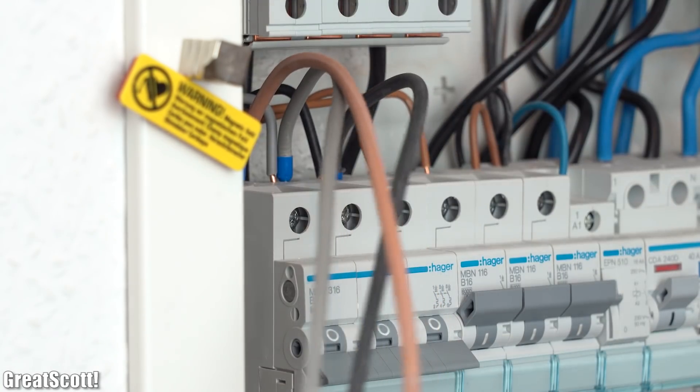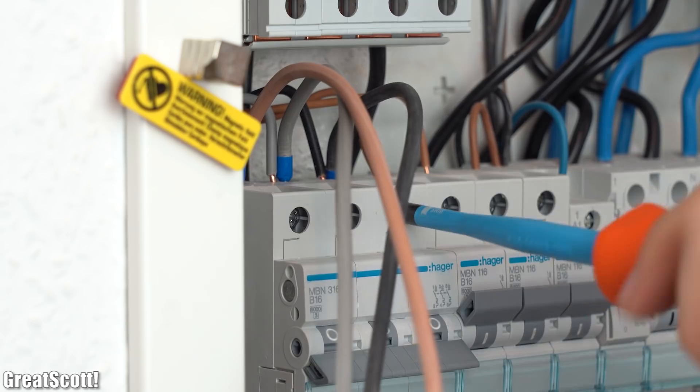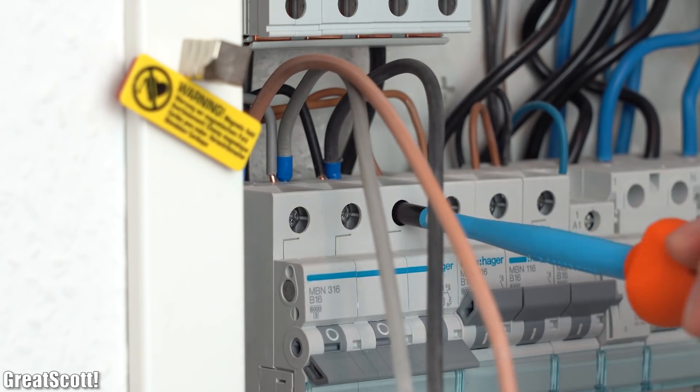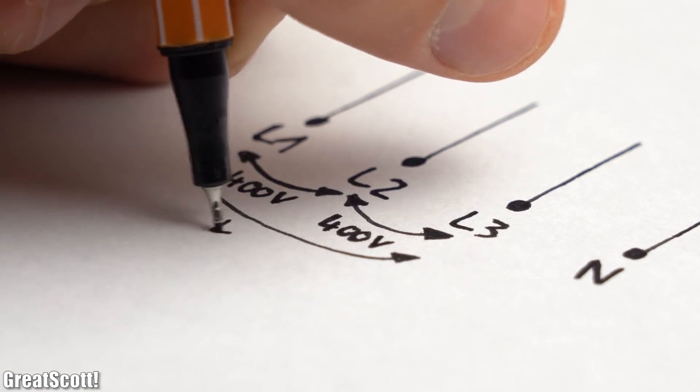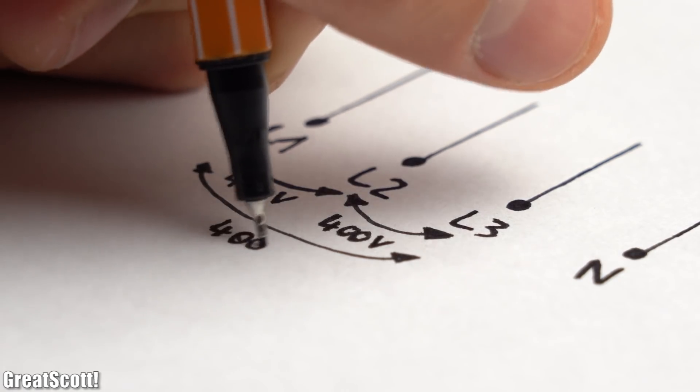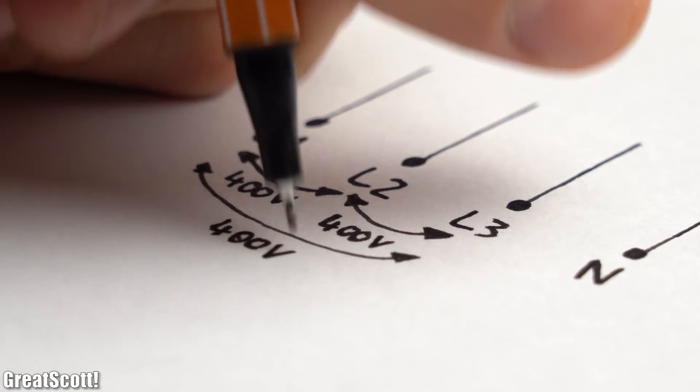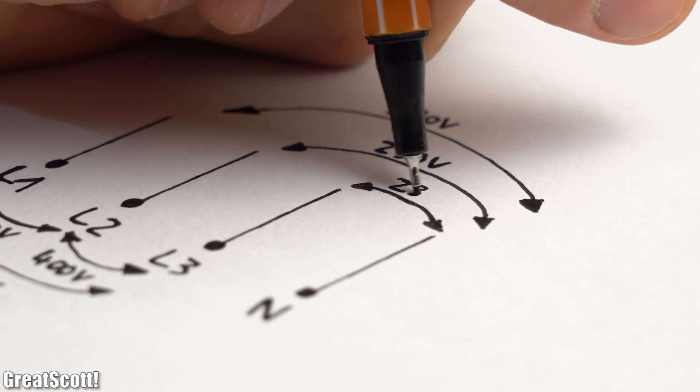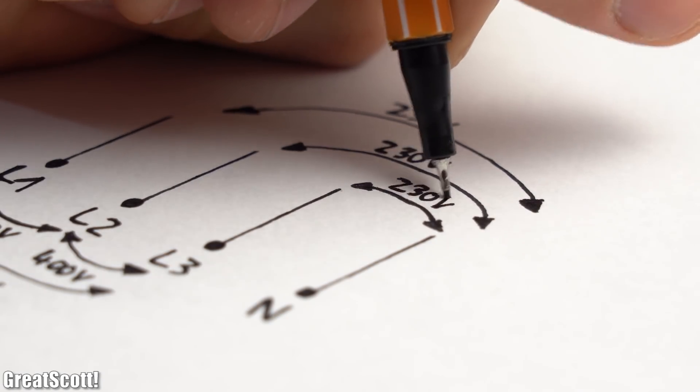But luckily I am a professional and thus easily wired up a 400V CEE cable whose L1, L2 and L3 phase feature a voltage of 400V to one another and 230V in relation to the neutral wire.